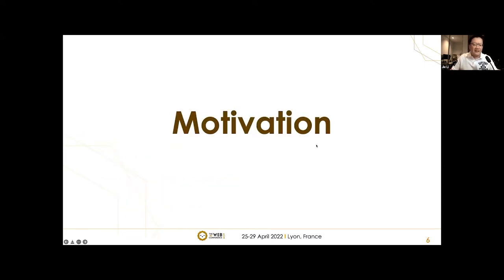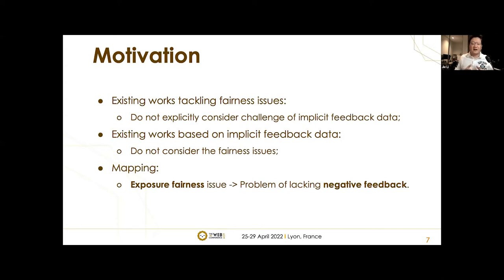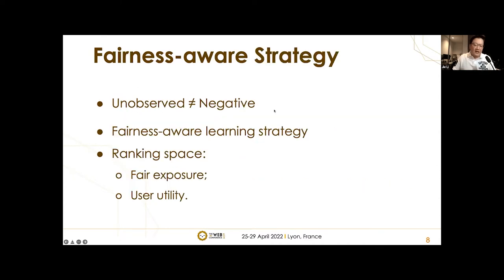Existing research on fairness issues mostly focuses on fairly allocating exposure to items, but doesn't explicitly consider the challenge of implicit feedback data, while existing algorithms based on implicit feedback don't consider fairness issues. To fill this gap, we consider mapping the exposure fairness issue to the problem of lacking active feedback in implicit feedback data. Specifically, we propose a fairness-aware learning strategy to search the space of rankings that can fairly allocate exposure across individual items while maintaining users' utilities as high as possible.